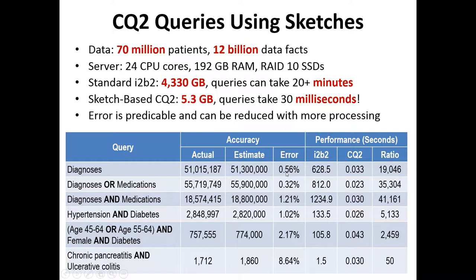The error is very predictable — there are mathematical equations that William helped me develop to estimate what the error is going to be. I specifically put some concepts together where I knew it would create a larger error than a typical one percent. But if I know this is going to be a query that doesn't run very well in 30 milliseconds, I can let it run for an entire second to lower that error. So it's very adjustable based on what you need for time and accuracy.